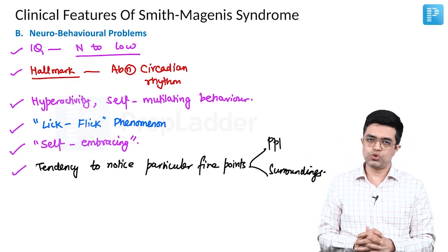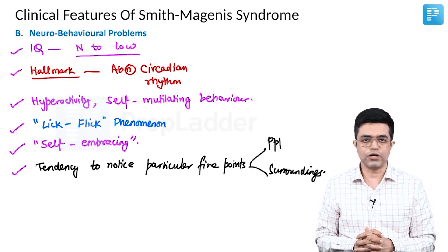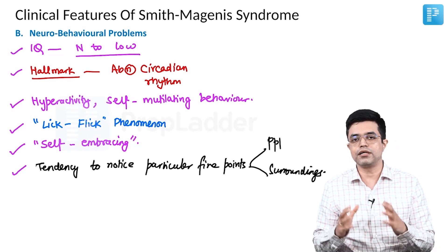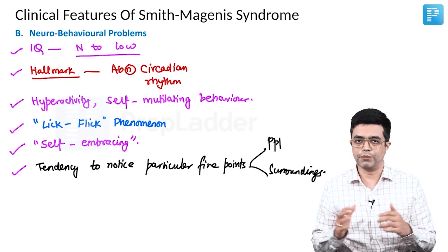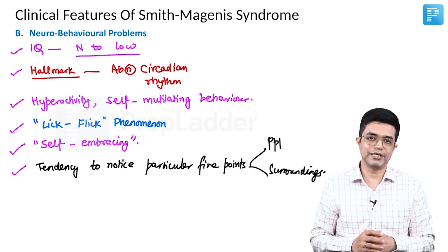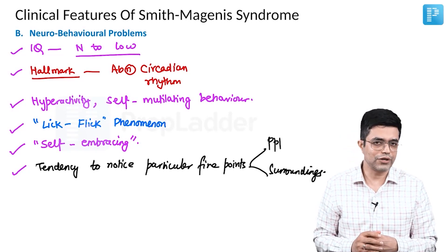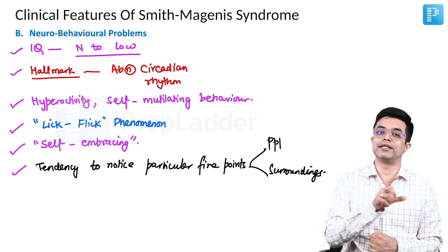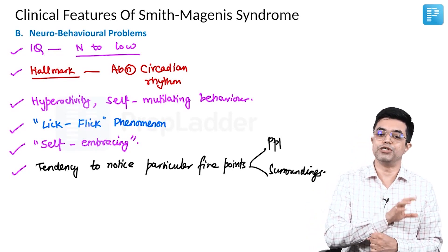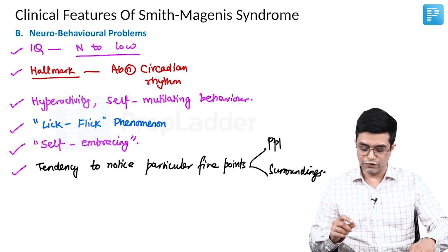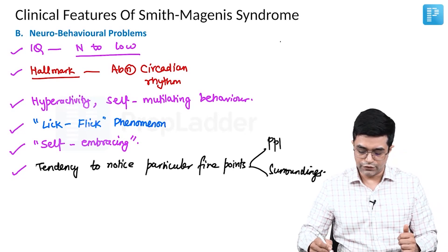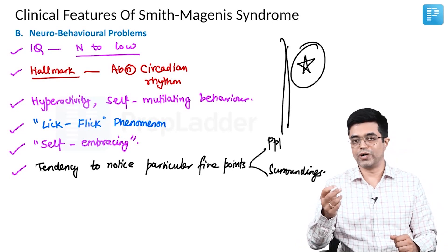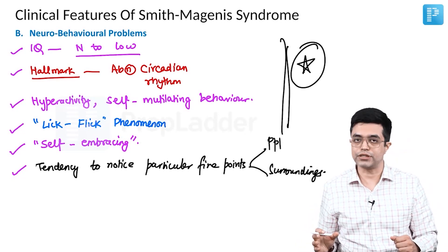Smith-Magnese syndrome usually does not have cardiovascular problems or other congenital malformations. It is a micro-deletion syndrome in which neurobehavioral problems are more important than the characteristic facial features. All the phenomena mentioned — lick-flick, self-embracing, circadian rhythm disturbance, and heightened perception — are potential MCQ one-liners for your exam.